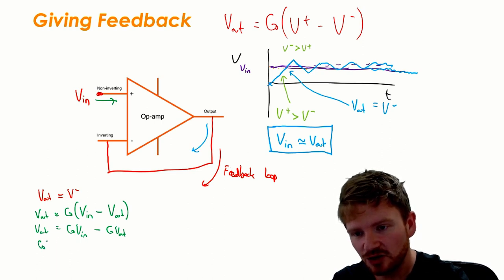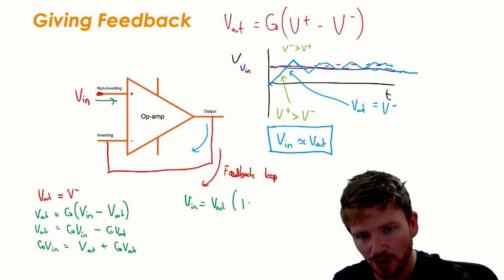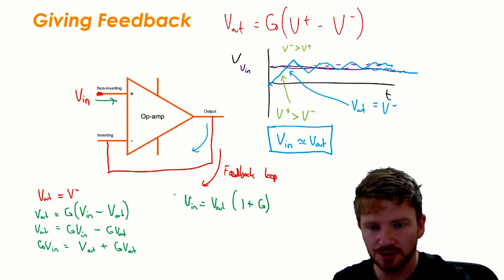So I'm going to get G V in is equal to V out plus G V out. V in is equal to V out times 1 plus G.